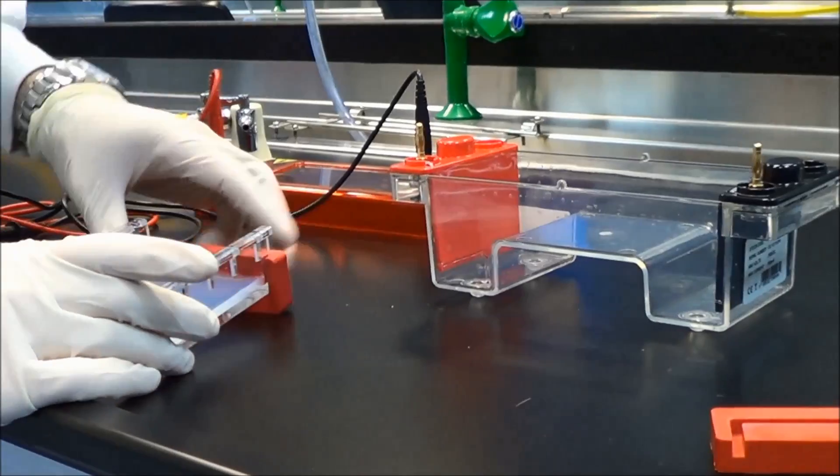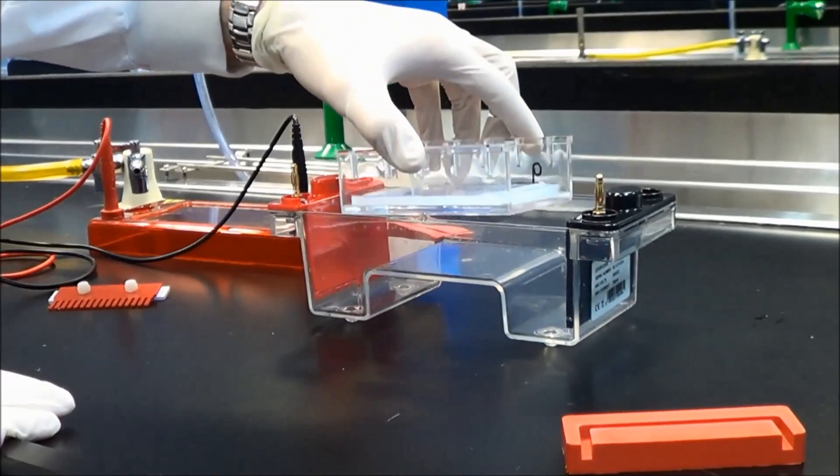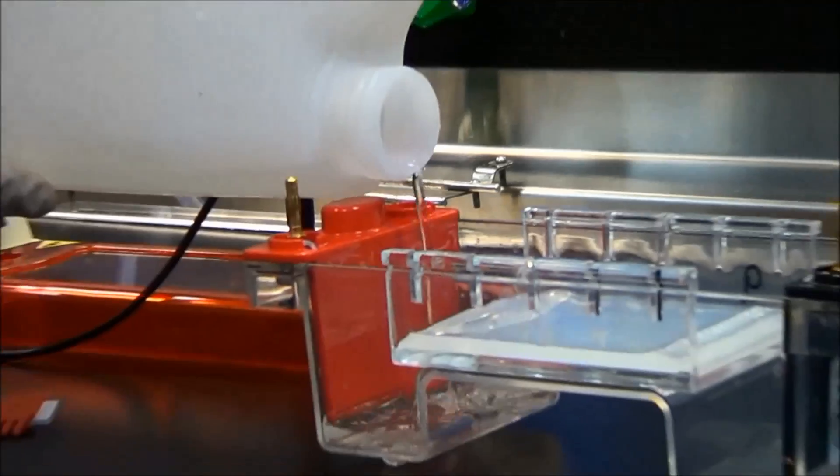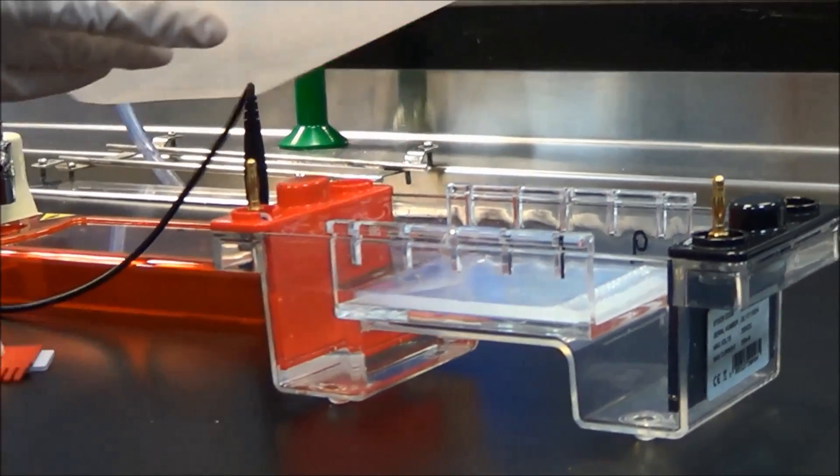Remove the casting dams and place the tray inside the gel tank. Add 1x TAE buffer to the tank so that it covers the wells in the agarose gel.